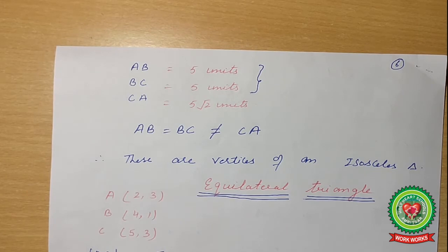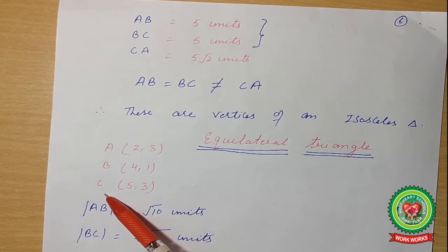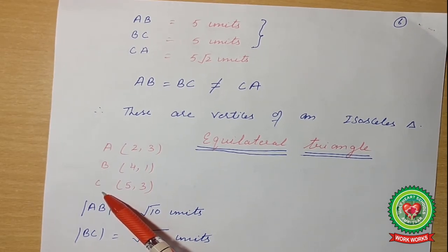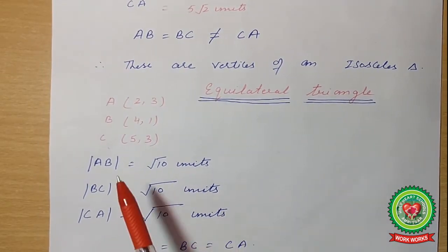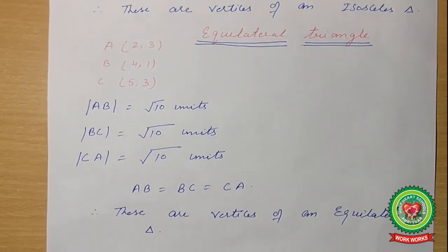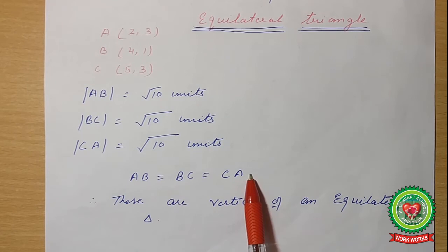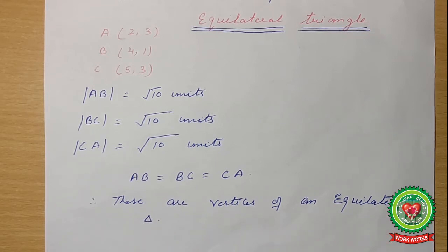The same approach applies to the equilateral triangle. For an equilateral triangle, you again have three vertices A, B, and C, and you apply the distance formula three times to find AB, BC, and CA. Suppose all three come out to 110 units — AB = BC = CA. The condition for an equilateral triangle is that all sides must be equal. Therefore, those would be vertices of an equilateral triangle.